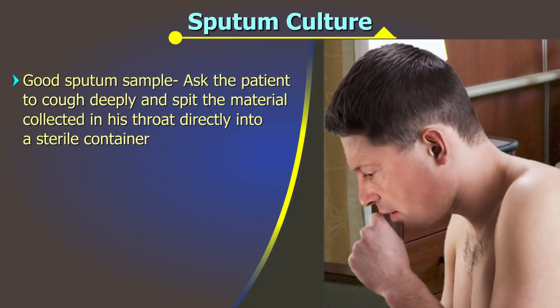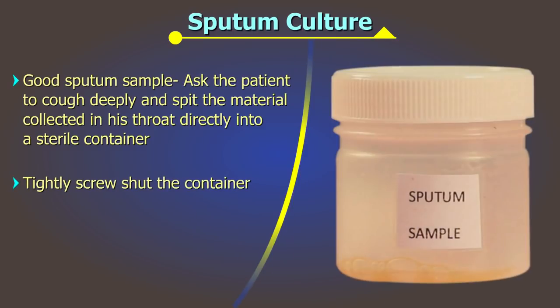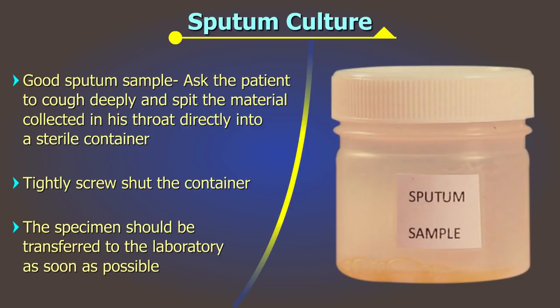For a good sputum sample, ask the patient to cough deeply and spit the material collected in their throat directly into a sterile container. Tightly screw shut the container and wipe off any spilled material with a tissue moistened with disinfectant. The specimen should be transferred to the laboratory as soon as possible, preferably within two hours, as delicate pathogens may not survive for long.